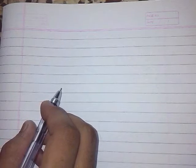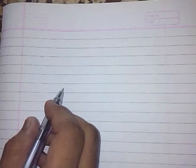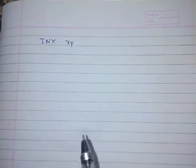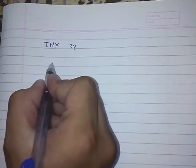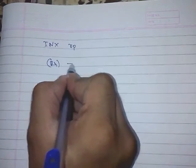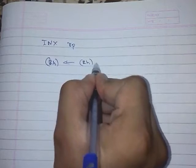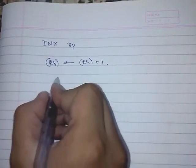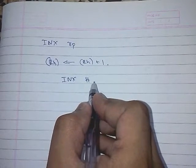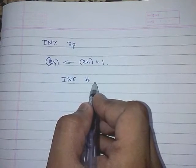We can also increment or decrement a register pair. For that, the instruction is INX RP. So if we want to increment any register pair, we write this instruction. For example, INX H — the H-L register pair will be incremented by 1. If the register pair is at some value, it will simply increment it by 1.